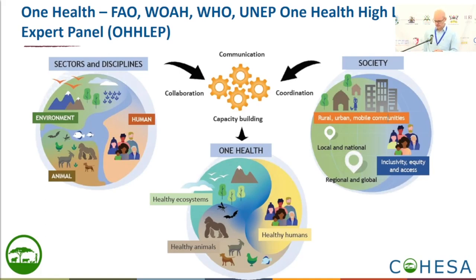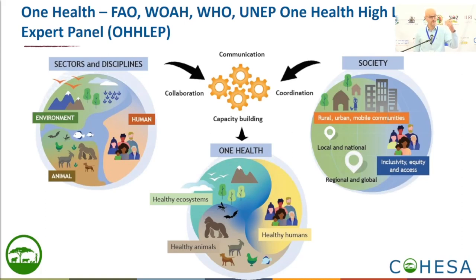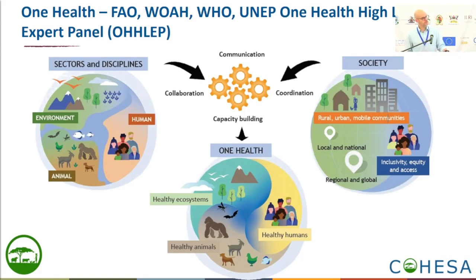I won't go deeply into that new definition, but essentially on the left-hand side you need to promote intersectorality and interdisciplinarity across different sectors. Those processes need to be applied from the local to the national to the regional and even global level. To achieve this, One Health needs to take into account inclusivity, equity, and access, and through developing soft skills around collaboration, communication, coordination, and capacity building, you can deliver a One Health approach: healthy animals and healthy humans within healthy ecosystems.